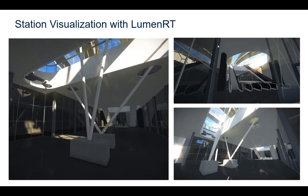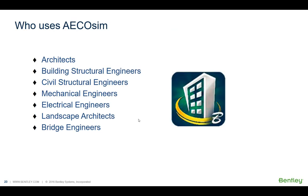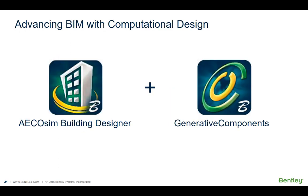Ecosim Building Designer can be introduced into the workflow. It is used across the globe in many different project types — infrastructure, mining, building, bridges, dams, and nuclear power — so we can see how it can be leveraged in rail design as well. The types of people who use Ecosim Building Designer include architects, building structural engineers, civil structural engineers, mechanical engineers, electrical engineers, landscape architects, and bridge engineers. We will use Ecosim Building Designer with its inbuilt Generative Components application to help lever off the geometry already available from Bentley Rail Track to add further detail and more components.